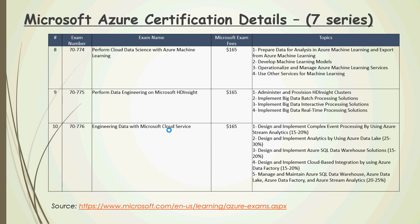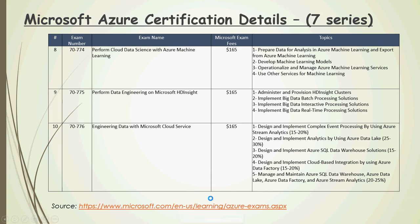To recap the seven series: 774 is Microsoft Azure Machine Learning, 775 is HDInsight for big data, and 776 is Microsoft Cloud Services. The source of all this information is Microsoft.com, with the link mentioned in the description section of the video below.